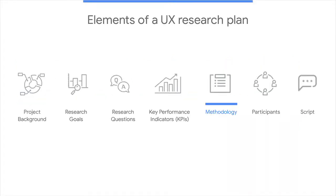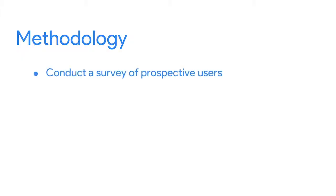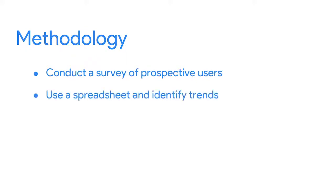The next element of your plan is the methodology — where you document the steps you'll take to conduct your research, including how you'll collect data and how you'll analyze it once you get it. To find out if users can find and schedule a dog walker in our new app, we might conduct a survey of prospective users, and to analyze the survey results, we'll use a spreadsheet and identify trends.